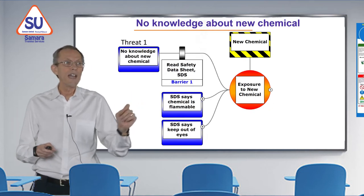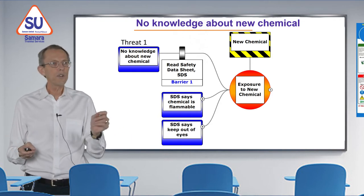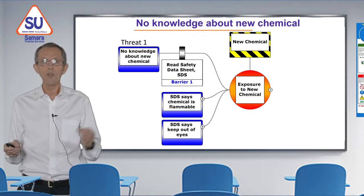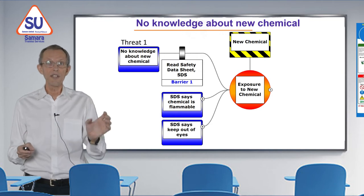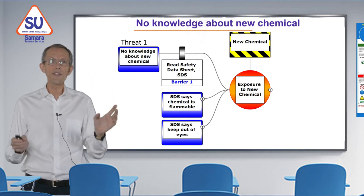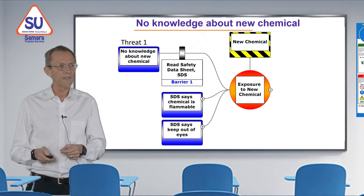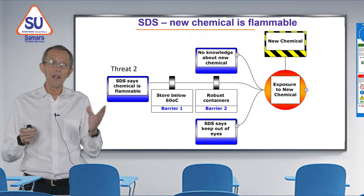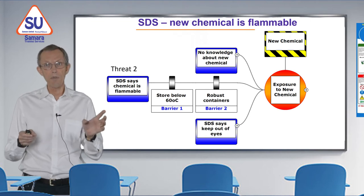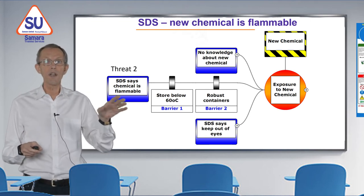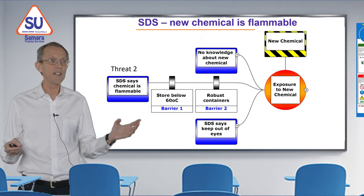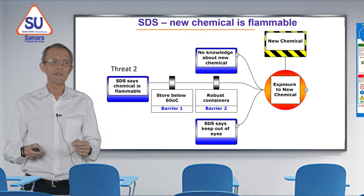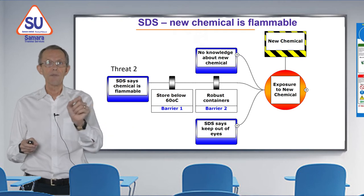To manage threat one — having no information about the chemical — we look at the safety data sheet. Every reputable supplier will provide this in a standard format listing all the safety information you could want. For threat two, the chemical is flammable, so we can control that risk by storing it below 60 degrees centigrade, perhaps in a shaded warehouse, and in robust strong containers — two barriers to prevent fire.